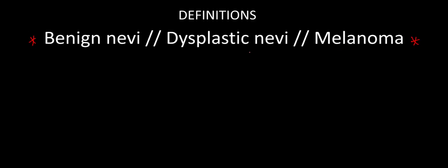For example, while some dysplastic nevi — which are what patients commonly refer to as funny-looking moles — can transform into melanoma, more often than not, melanoma arises de novo, or on its own. So with that big picture overview, let's jump right into the histological distinctions among these lesions.